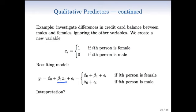Well, since X_I takes on only two possible values, 0 or 1, the model is either going to be beta_0 plus beta_1 plus error if the person is female. And if the person is male, it's just going to be beta_0 plus error. So beta_1 is telling us the effect of being female versus the baseline, in this case, being male. And so that's how we deal with the categorical variable with just two levels.